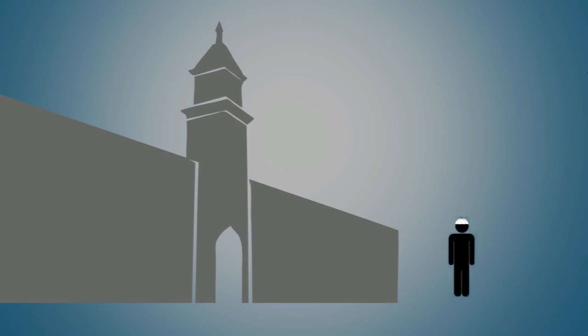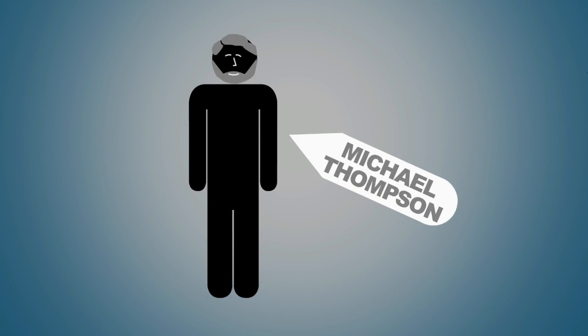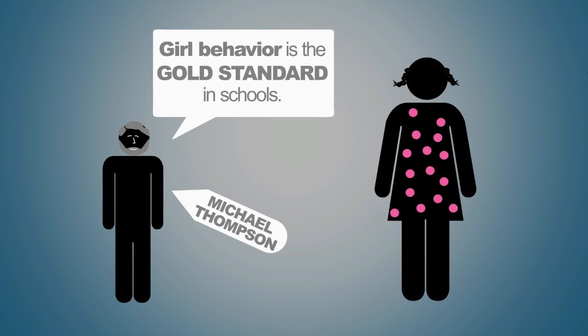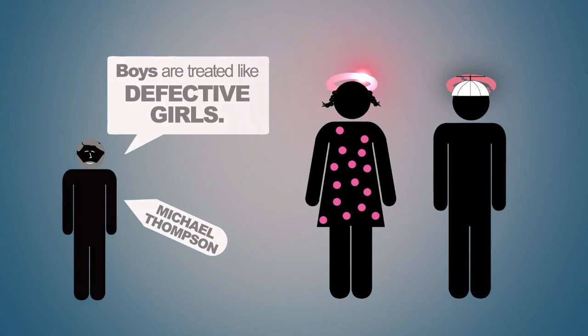But increasingly, our schools have little patience for what only a couple of decades ago would have been described as boyishness. As psychologist Michael Thompson has aptly observed, girls' behavior is the gold standard in schools. Boys are treated like defective girls.